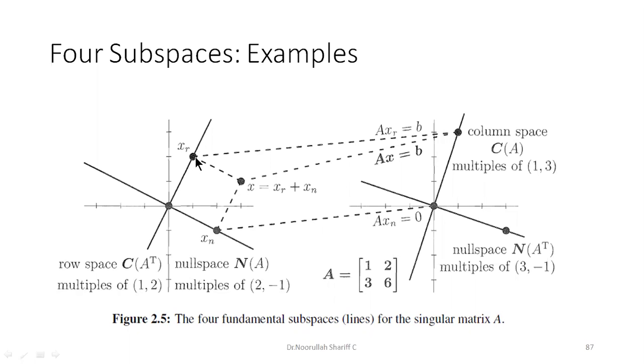So if you just take Xr, if you just take Xr, AXr will be equal to B because AXn will be equal to 0. Okay, if I write AX equal to B, X can be written as Xr plus Xn, right? So then I can just divide it into two parts, AXr plus AXn equal to 0.